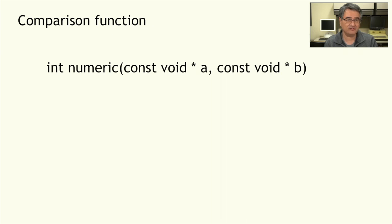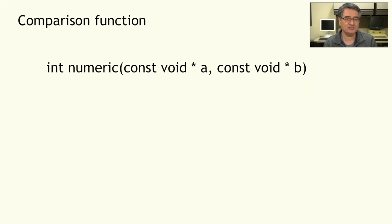The prototype for the comparison function looks like this. You can change the name of the function, but everything else needs to be the same. The function returns an integer, and it takes in two parameters which are both void pointers. A void pointer is C's way of saying that this is just the address of something. The quick sort function doesn't know what kinds of things it's sorting — it could be floats, it could be integers, it could be strings. They all have different sizes, but we do know that they have addresses in memory.